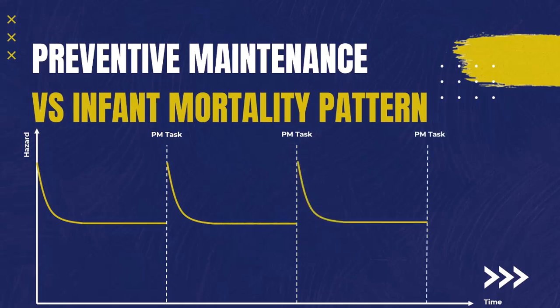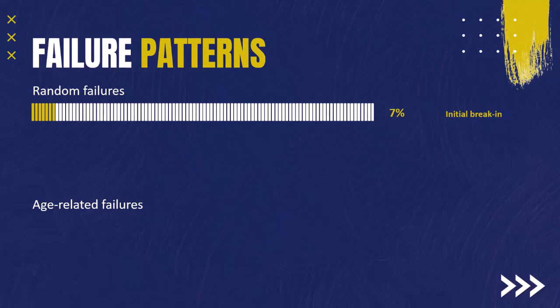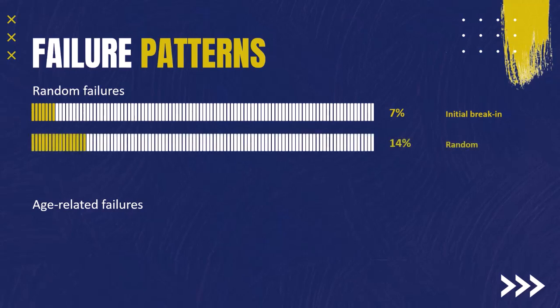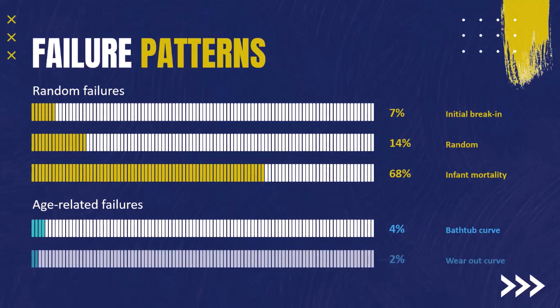Now that we understand the difference between failure patterns, what is approximately the percentage of assets following each pattern? A study was carried out and the results were very interesting: 7% of assets followed the initial break-in pattern, 14% followed random failure, and 68% followed the infant mortality pattern — meaning 89% of failures follow a random, non-age-related pattern. The remaining 11% were age-related: 4% bathtub curve, 2% wear out, and 5% fatigue.